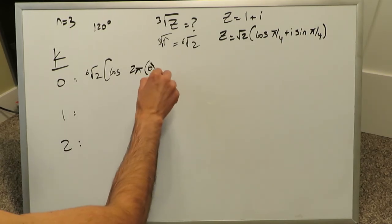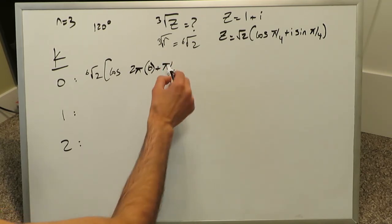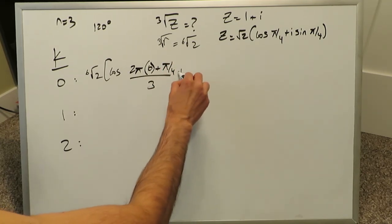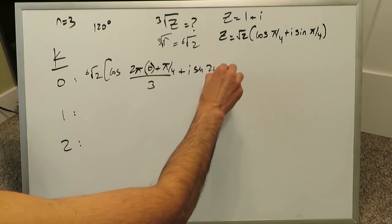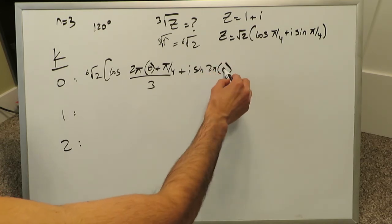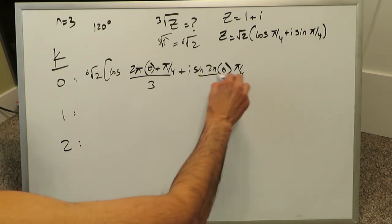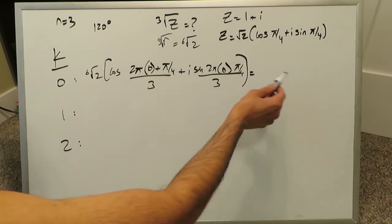We have 2 pi k here, k value is a 0, plus theta which is pi over 4, which is 45 degrees, divided by 3, plus i sine 2 pi times the k value, which is 0 here, pi over 4, over 3, and we have to calculate that.